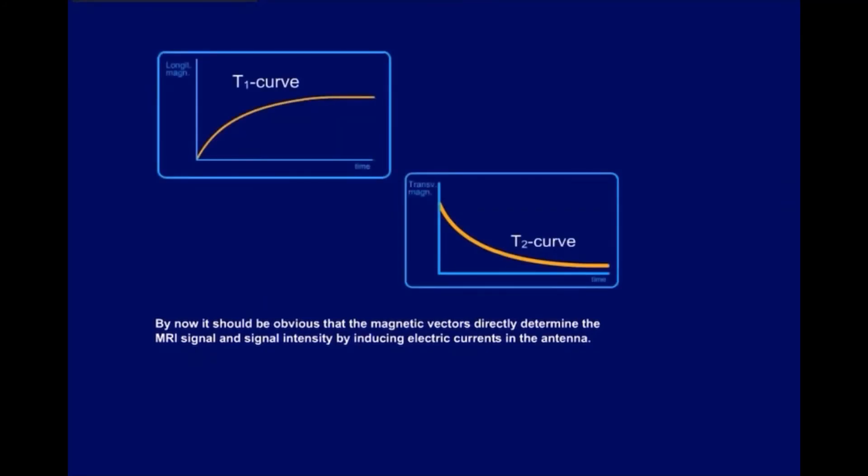Instead of the terms longitudinal, or transversal magnetization, we can also use the term signal, or signal intensity, at the axis of our T1 and T2 curves. This will hopefully become clearer as you continue with this program.